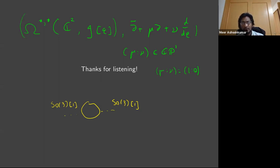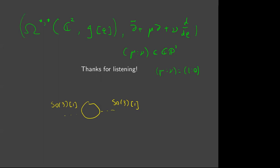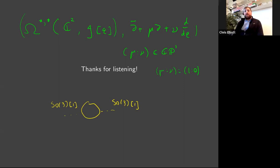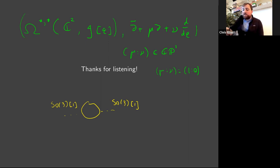When quantizing the trivialization of the SO(n) action, one could think about it using a background field perspective: coupling the original classical field theory to background fields valued in the relevant Lie algebra — in our case, coupling to the Lie algebra SO(n)-deRham. This looks like SO(n) shifted by one mapping to SO(n) in degree zero by an isomorphism.